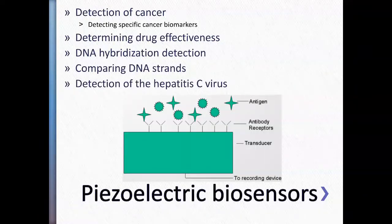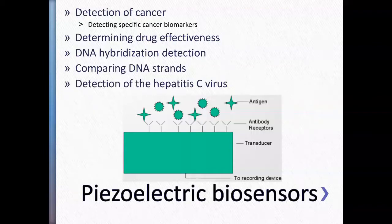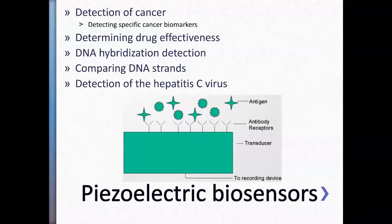Piezoelectric biosensors are usually used to detect cancer biomarkers, assess drug effectivity, and perform DNA hybridization. When doing DNA sequencing, the piezoelectric sensors are part of the solid support where the DNA hybridizes. When DNA hybridizes to its complement fragment attached to the bioelectronic support, the hybridization changes the weight of that fragment, generating an electrical signal. You can use this to compare DNA strands — longer strands have larger weights. It can also be used in detecting hepatitis virus and many other viruses.